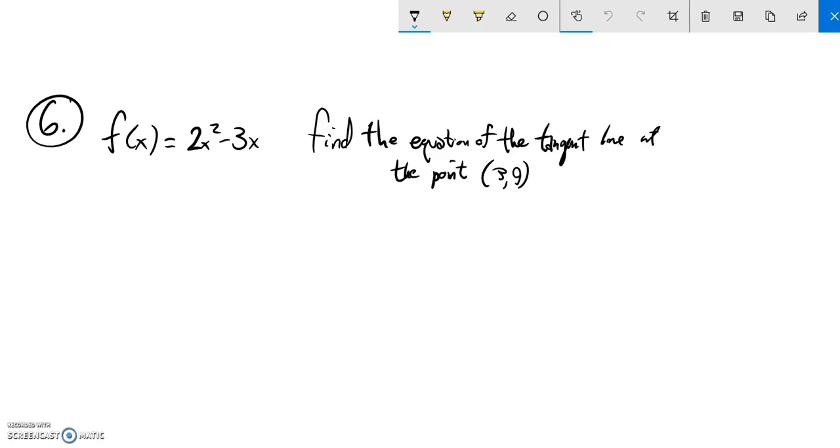So (3,9) is telling us that (3,9) is a point on this. In other words, if I go f(3), it should spit out 9. 9 times 2 is 18, minus 9 is 9. Yeah, so f(3) is 9.